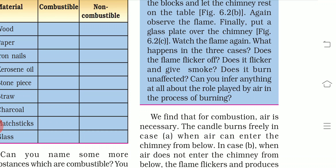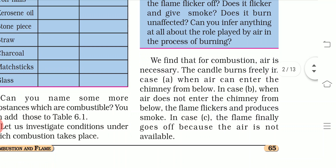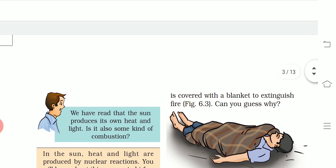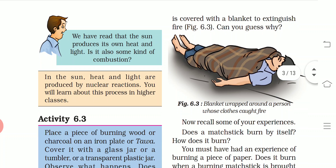To cut the supply of oxygen, cover the burning person with a blanket or put sand or soil on them — do not put water. We find that for combustion, air is necessary. In the experiment, when air enters freely the candle burns well; when air is restricted the flame flickers and produces smoke; and finally when air is fully cut off the flame goes out. Air — and specifically oxygen — is needed to support burning.